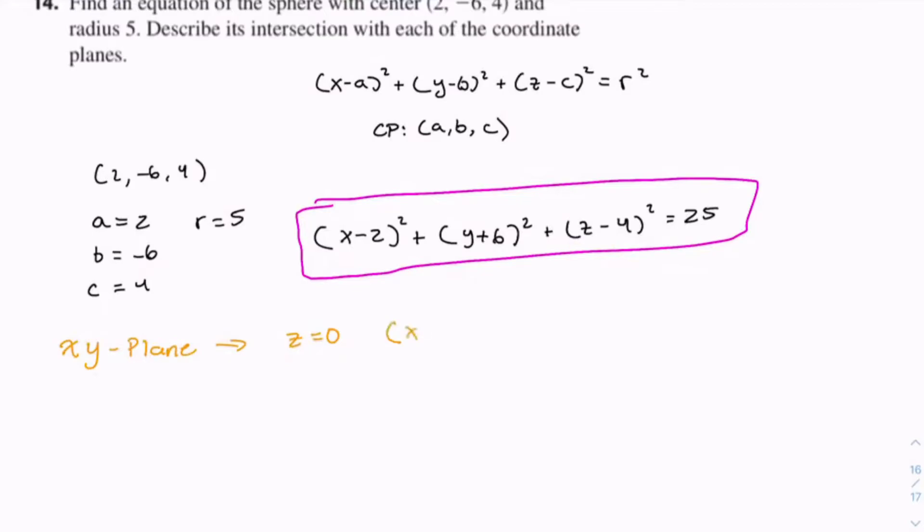So we have (x - 2)² + (y + 6)² + (0 - 4)² = 25. And we can simplify this further.